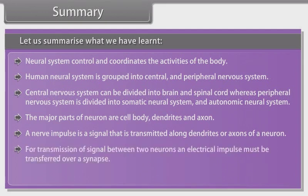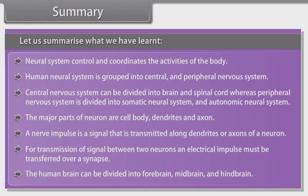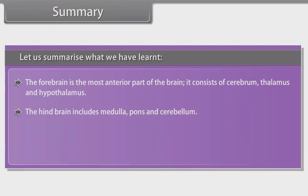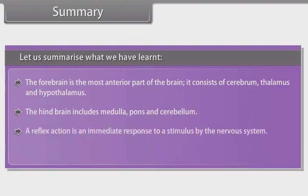A nerve impulse is a signal that is transmitted along the dendrites or axons of a neuron. For the transmission of signals between two neurons, an electrical impulse must be transferred over a synapse. The human brain can be divided into the forebrain, midbrain, and hindbrain. The forebrain consists of the cerebrum, thalamus, and hypothalamus. The hindbrain includes the medulla, pons, and cerebellum. A reflex action is an immediate response to a stimulus by the nervous system. The human eye and human ear are the sensory organs.